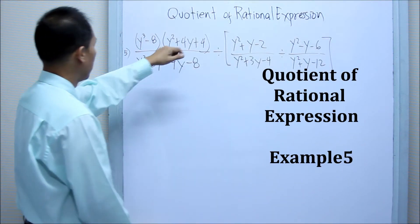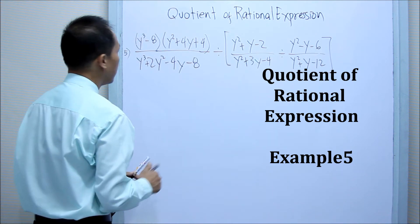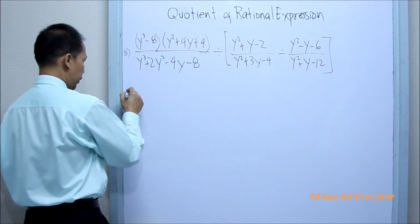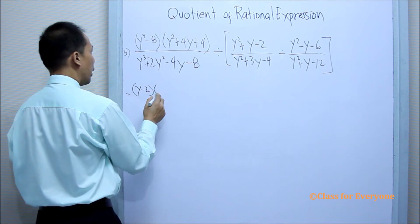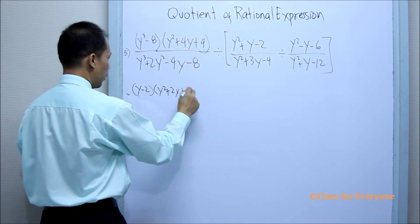Let us have another example. The difference of 2 cubed can be factored. It is y minus 2 and y squared plus 2y plus 4.